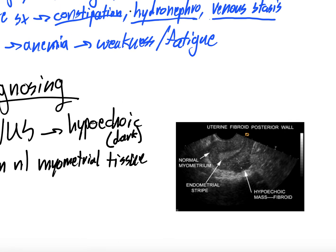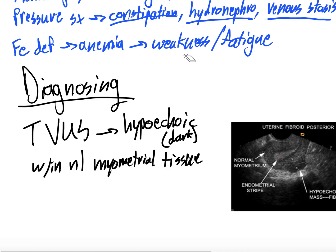In this picture, I'll outline the uterus here. This is normal myometrium — you see this mixed echoic tissue, darker than the endometrial stripe here. And then you have this hypoechoic mass on the outside of the myometrium. It's darker than the myometrium, which is this lighter mixed echoic area — and it kind of bulges off the normal myometrium. That hypoechoic area bulging off the normal myometrium is a leiomyoma or fibroid.